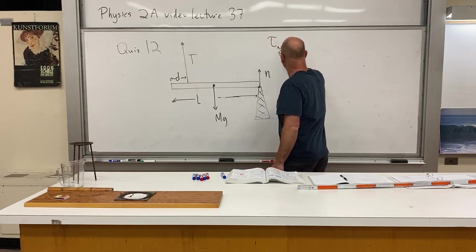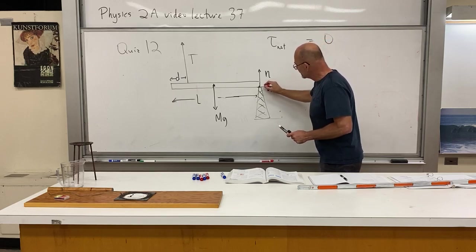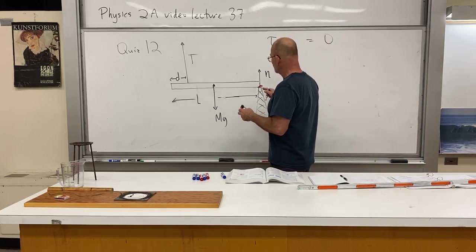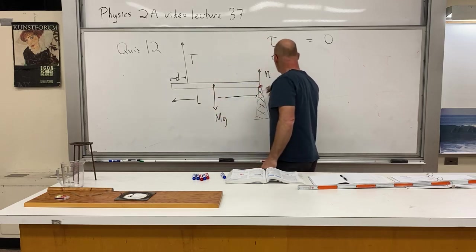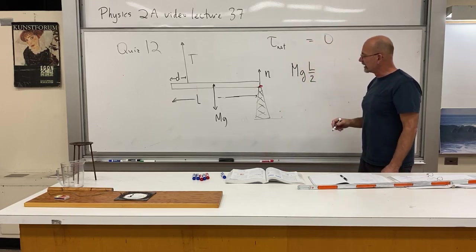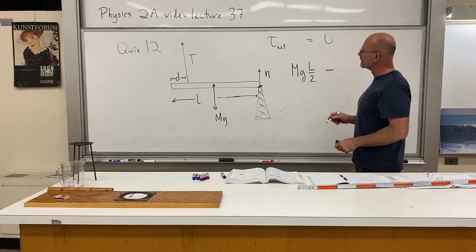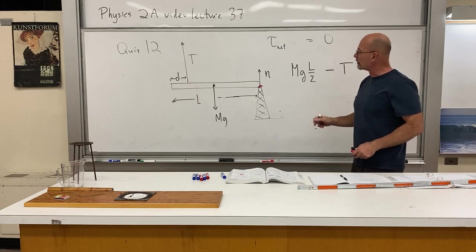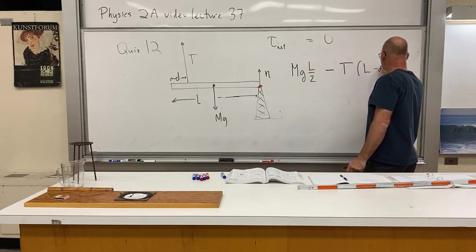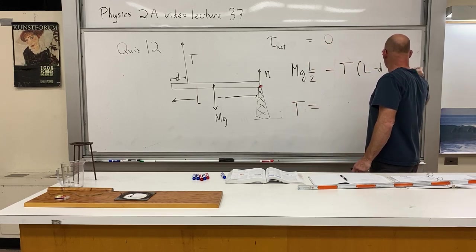Setting the net torque equal to zero, measured around the pedestal: we have a counterclockwise torque mg·(L/2) and a clockwise torque T·(L − d). Setting that equal to zero: mg·(L/2) − T·(L − d) = 0, and we solve for the tension.